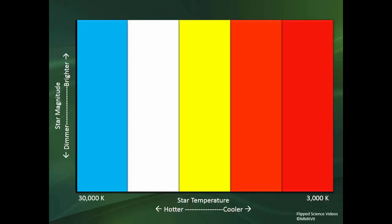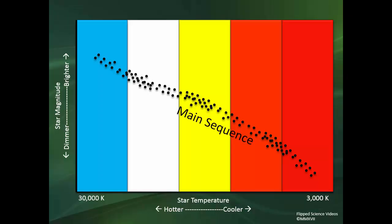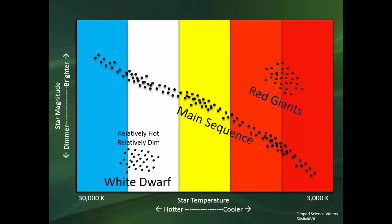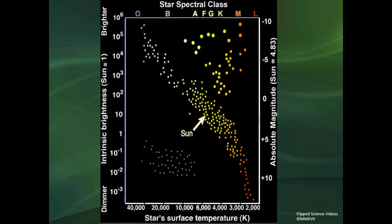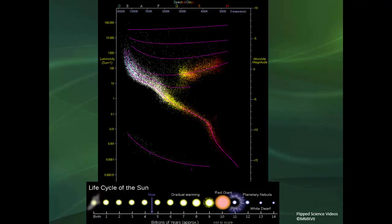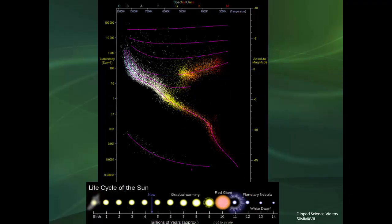So as we plot this information, we have our main sequence through the middle. We have our red giants. And then finally, we have our relatively hot, relatively dim stars, which are our white dwarfs. So as we look at our map, we now go through, we can see all of the different parts.